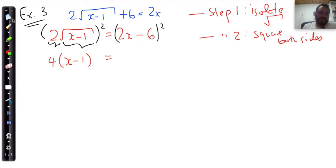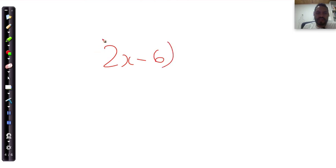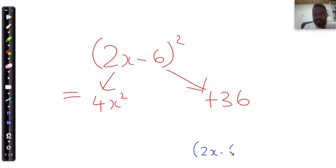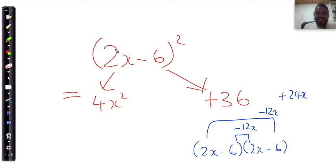Now what many students do and make a mistake with is this one over here, 2x minus 6. What we've seen commonly is they say when I square this, the answer is simply 4x squared plus 36. That is not the answer, because you are actually squaring 2x minus 6 times by 2x minus 6, right? And you need to look at the entire thing over here. So that's going to give you negative 12x, and that over there is going to give you another negative 12x, which will give you together negative 24x.